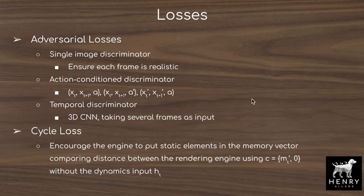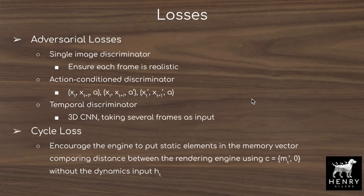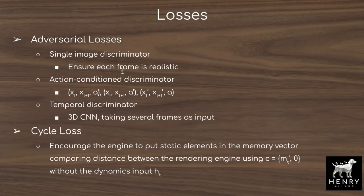The adversarial losses start with the single image discriminator, which takes one generated image X_{t+1} and tells if it's realistic — whether it belongs to the set of Pac-Man or VisDoom images, as in standard GAN training. The second loss is the action condition discriminator: the discriminator receives tuples of X, the next X, and the action taken, to ensure the game engine is incorporating the user's action. If the user moves Pac-Man left or right, the generated image should reflect that. This is done with adversarial loss between negatively sampled pairs — the true action versus a randomly sampled negative action (e.g., the true action is left, we sample down) — and between two randomly sampled frames and the action taken.